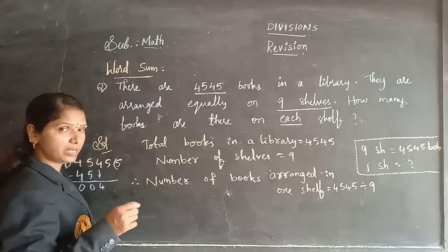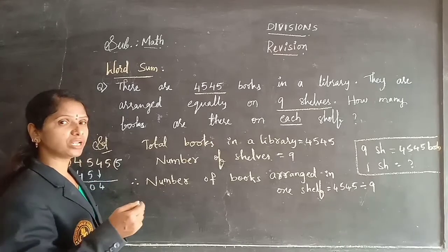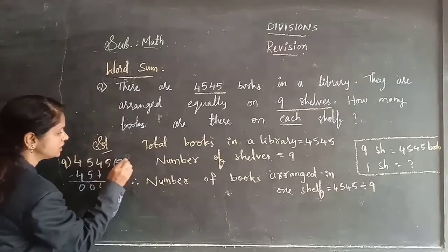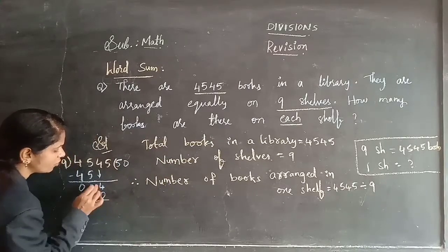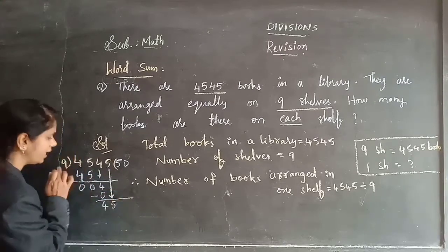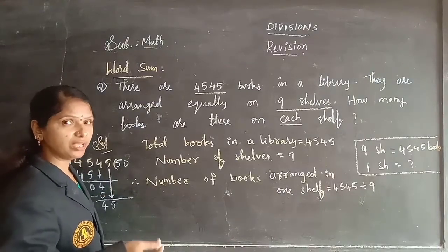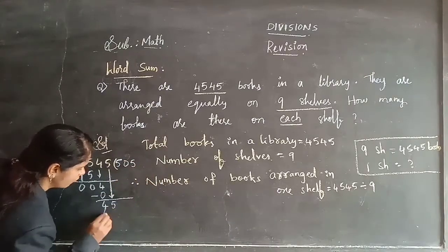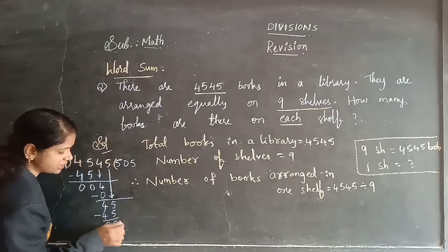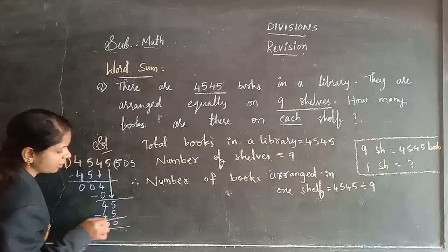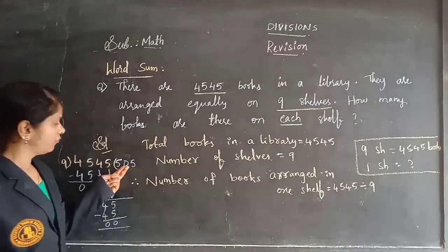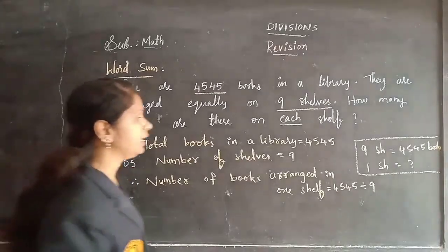4 does not come in the 9 table — bigger is 9×1=9, so take before: 9×0=0. 4 minus 0 = 4. Bring down next digit 5, making 45. Again 9×5=45. So 0 remainder. No more digits to bring down. So the quotient is 505. Therefore, 505 books should be arranged in one shelf.